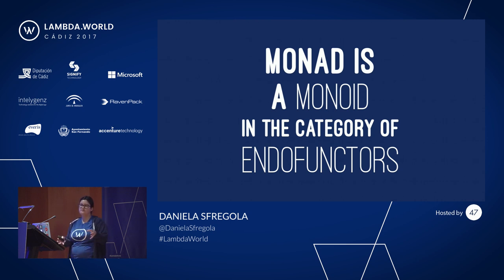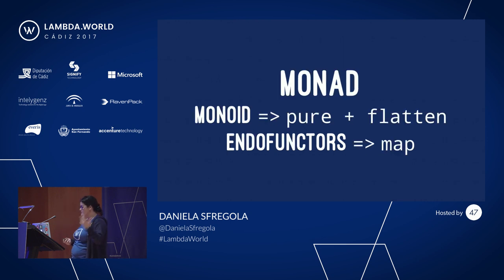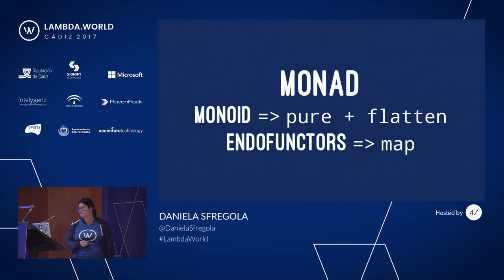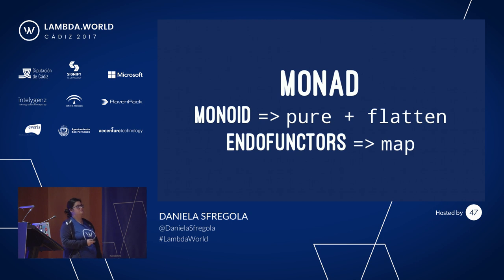The second word is monoid. We've seen that monoid means two things: you have an identity and you have composition. Composition is putting two arrows together; identity is an arrow that does nothing. Talking about code: monoid means you have a 'pure' function and a 'flatten' function — flatten is just squeezing things together. Endofunctor means you have a map. And in our monad we had pure and flatMap. There you go — you can now understand that crazy sentence.